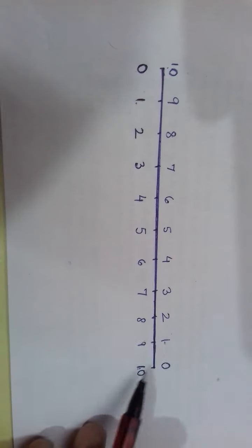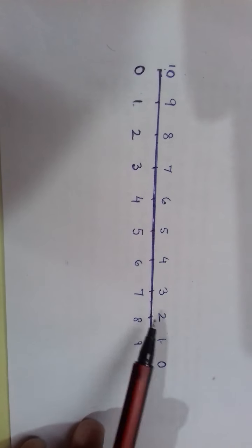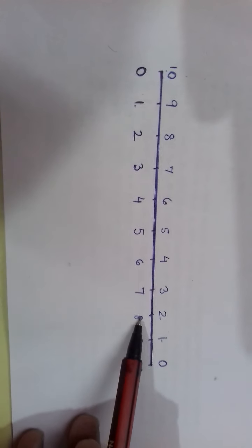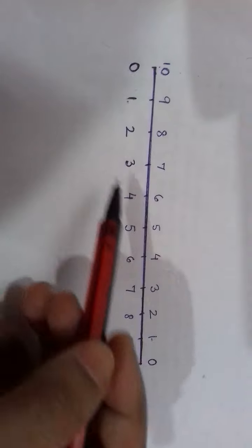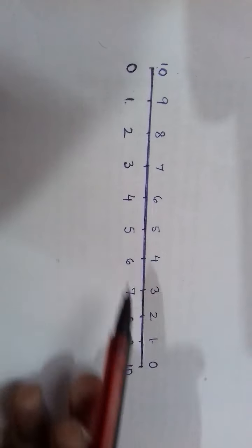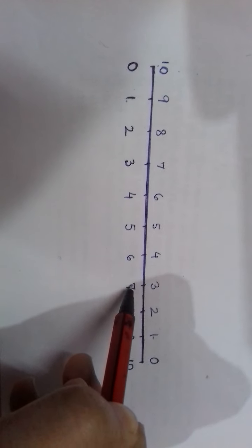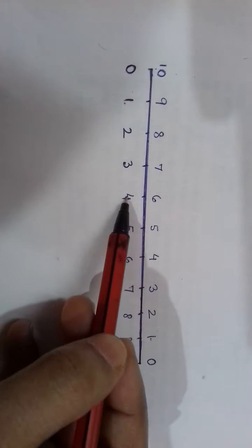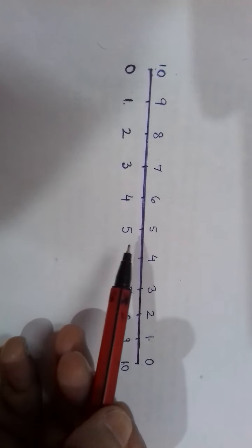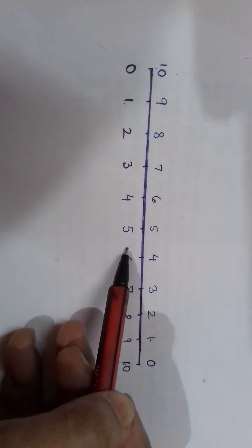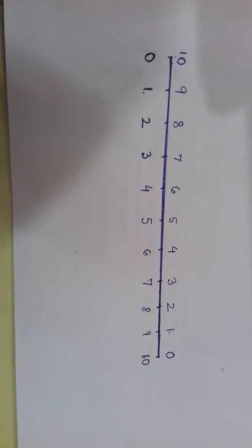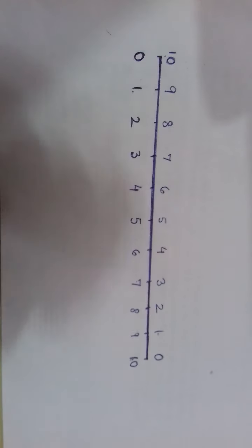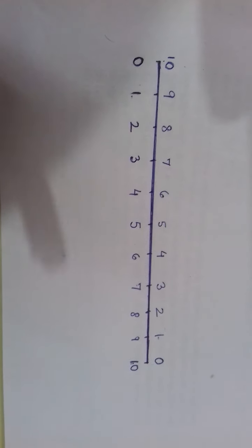Similarly, 8 and 2, or 2 and 8 — the answer will be 10. Same way, 7 and 3, or 3 and 7 — addition of these two numbers will give 10. Same way, 6 and 4, or 4 and 6 will give the answer 10. And 5 and 5 will obviously give 10. So these pairs will always give the answer 10.